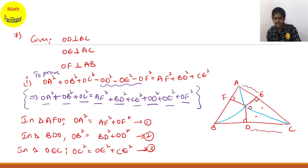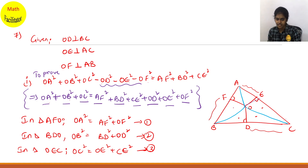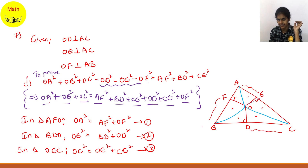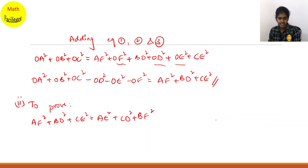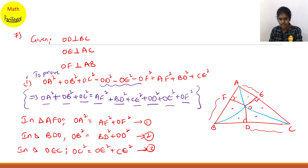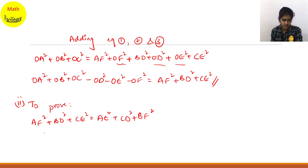So out of the triangles, we took this triangle for the first one; now you will take this triangle. From the question itself, I identified. So I want triangle OAE, triangle OCD, and triangle BFO for the second bit. AF square plus BD square plus CE square equals AE square plus CD square plus BF square.